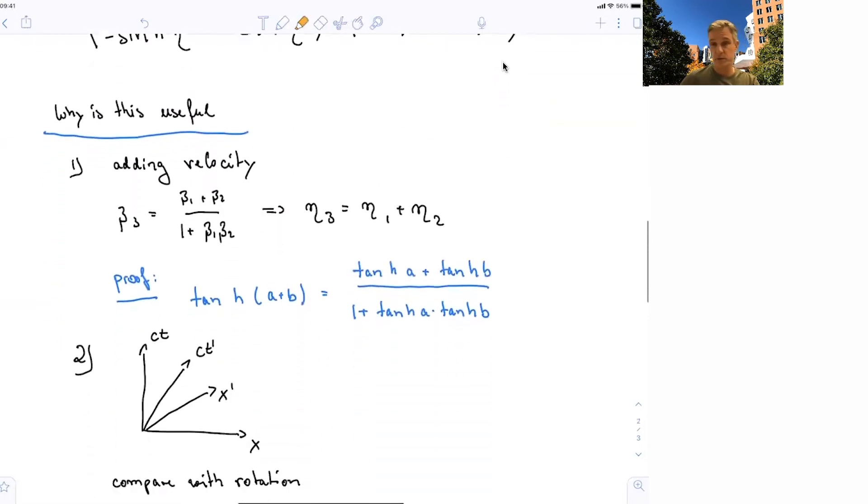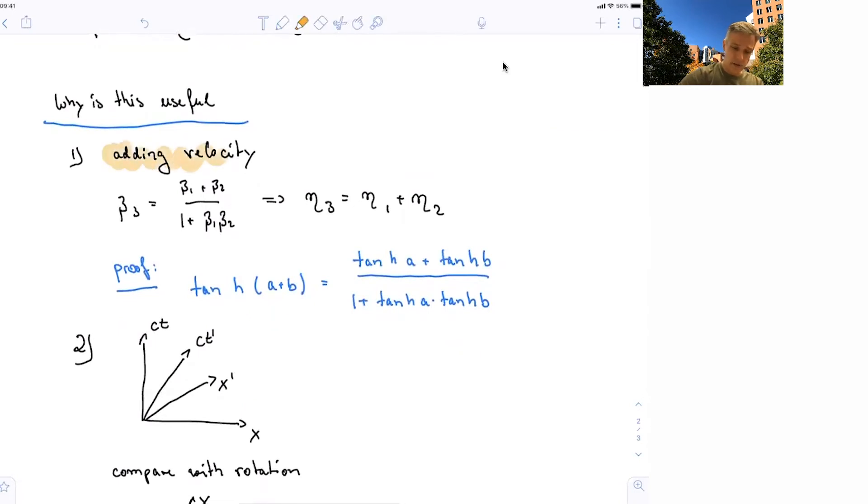So you should always ask, why is this useful? The first part is that when we add velocities, we found this complicated transformation where the new velocity equals the first velocity times the second velocity over 1 plus the product of the two velocities. And this is much easier now, as we can just add the velocities. The third velocity equals the first plus the second. This is much easier to actually calculate.